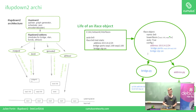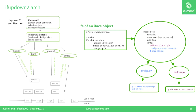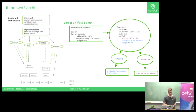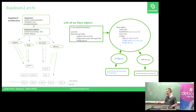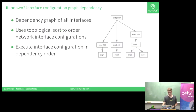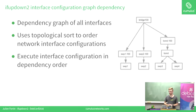How does it work? We have a core containing the parser, a graph generator, and some other things. The interfaces are scheduled in order and the add-ons take care of the configuration of each specific attribute. Each module is able to declare its dependencies, and then we build this graph of all the interfaces and schedule them in order.